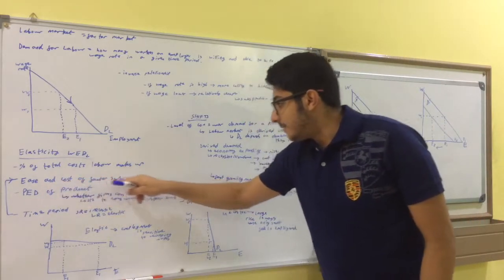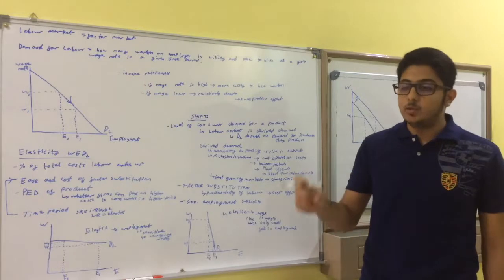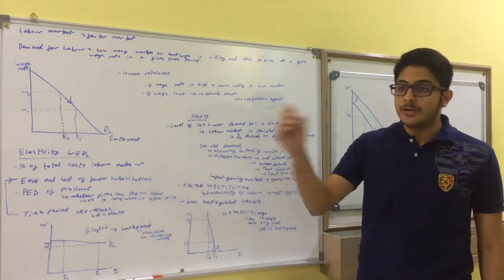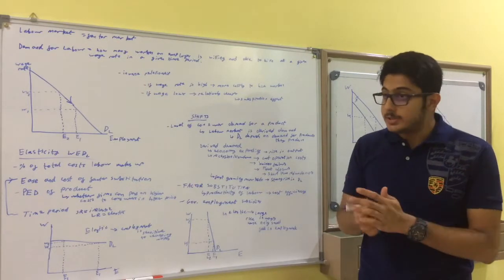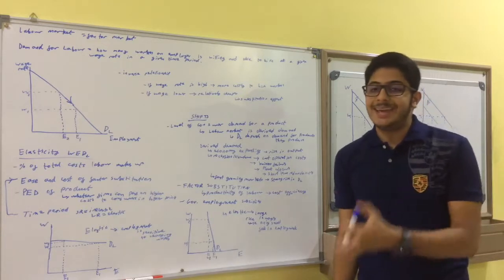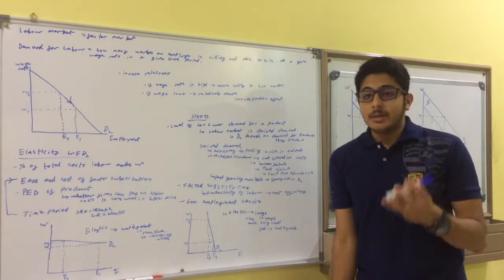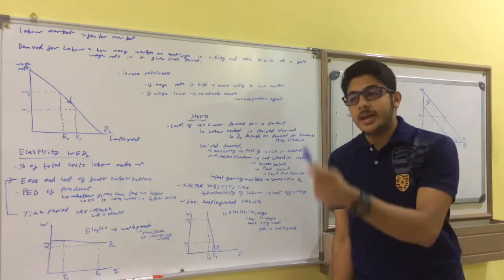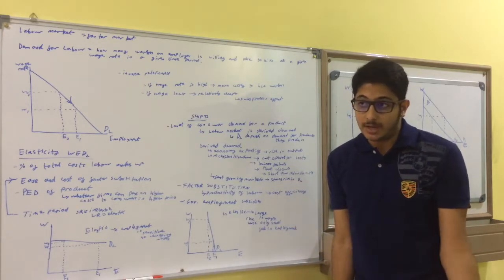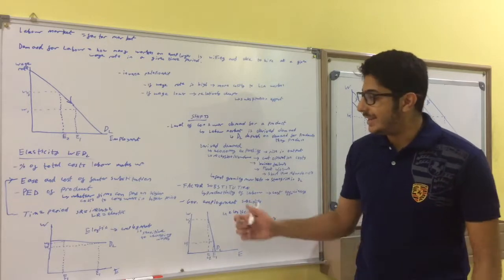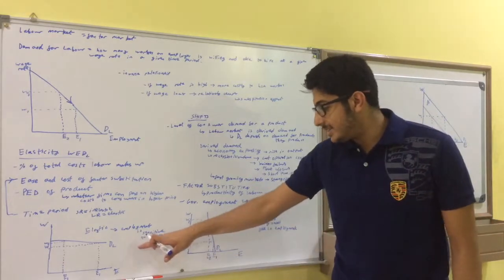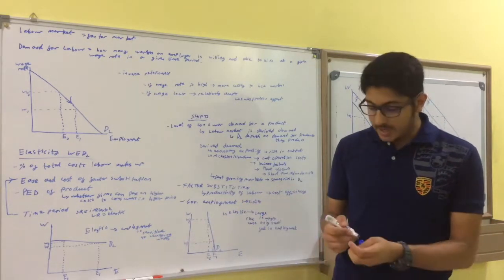The ease and cost of factor substitution. If it's easy to switch capital for labor or the other way around, then demand for labor is going to be elastic. If the wages for labor go up, even by a little bit, then you're going to switch the labor for capital because it's easy for you to do that. So, demand for labor will be inelastic. So, employment is sensitive to changing wages.